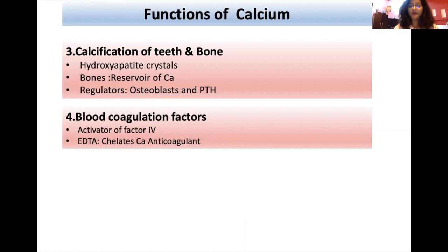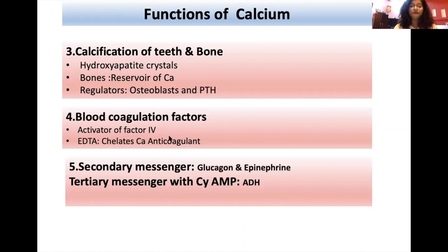Calcium acts as blood coagulation factor number 4. It reacts with prothrombin to activate the coagulation cascade. EDTA, used as an anticoagulant, has the capacity to chelate calcium. By chelating calcium, it inhibits the clotting mechanism in serum, which is why it is used as an anticoagulant.